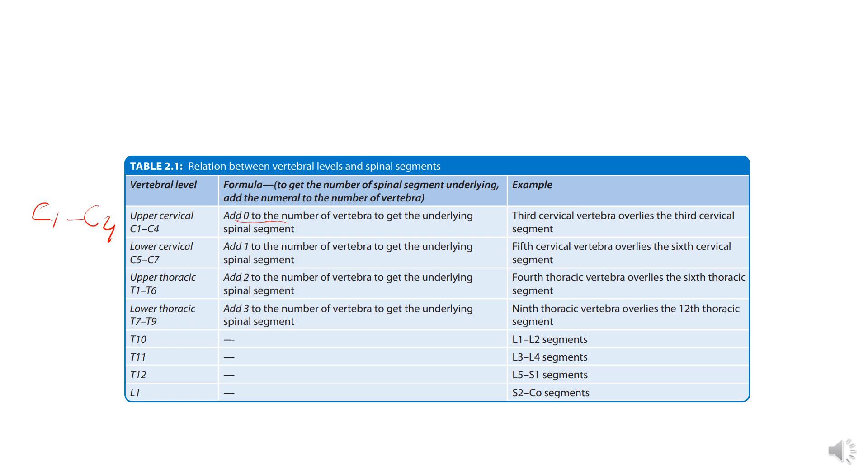In the lower cervical region, C5 to C7, add 1. So we add 1. Fifth cervical vertebrae overlies the sixth cervical segment.